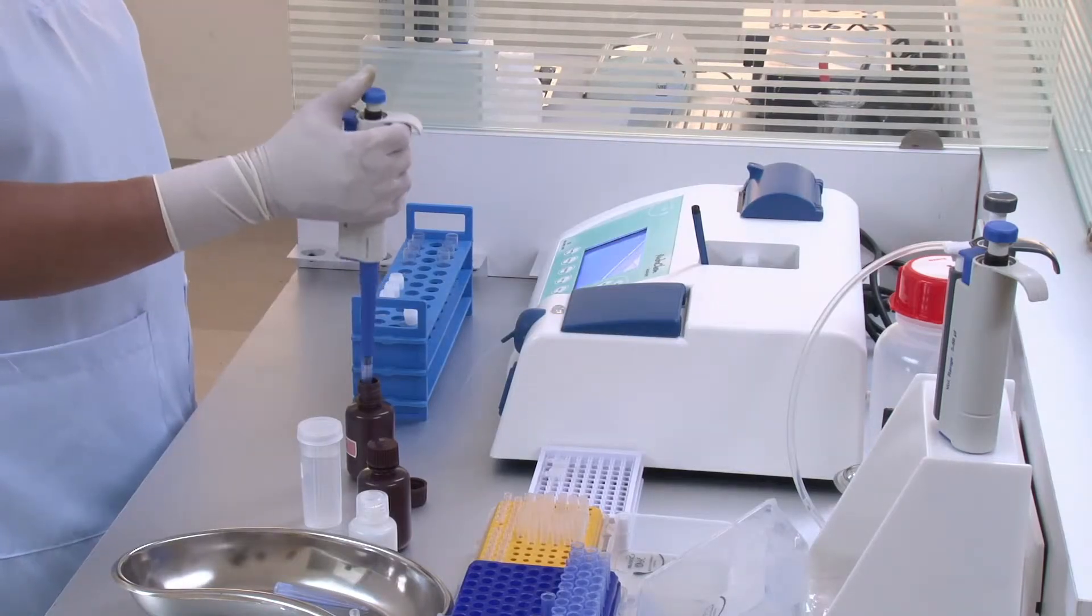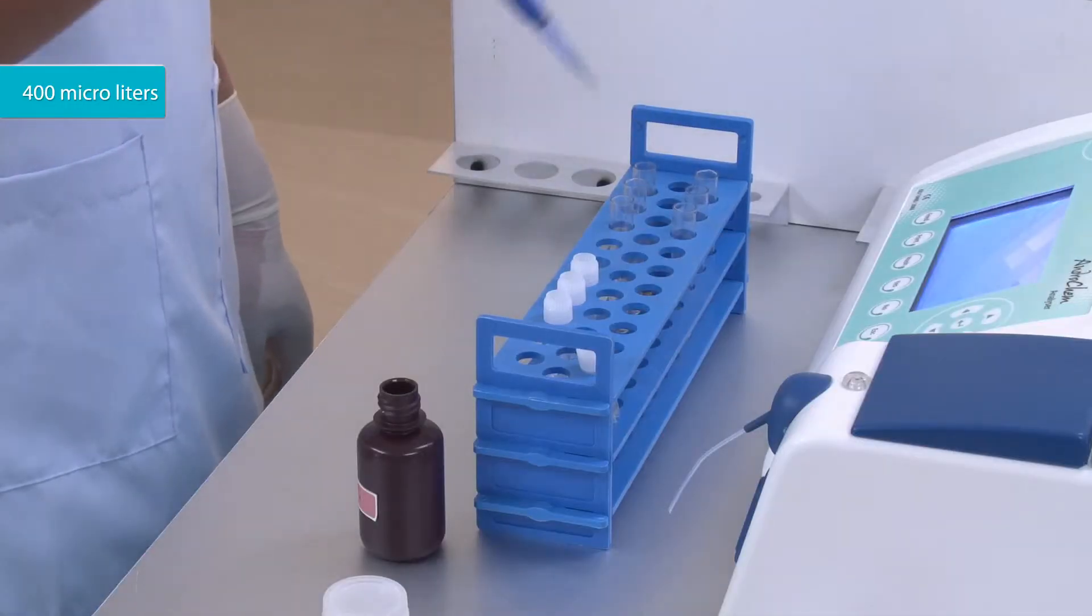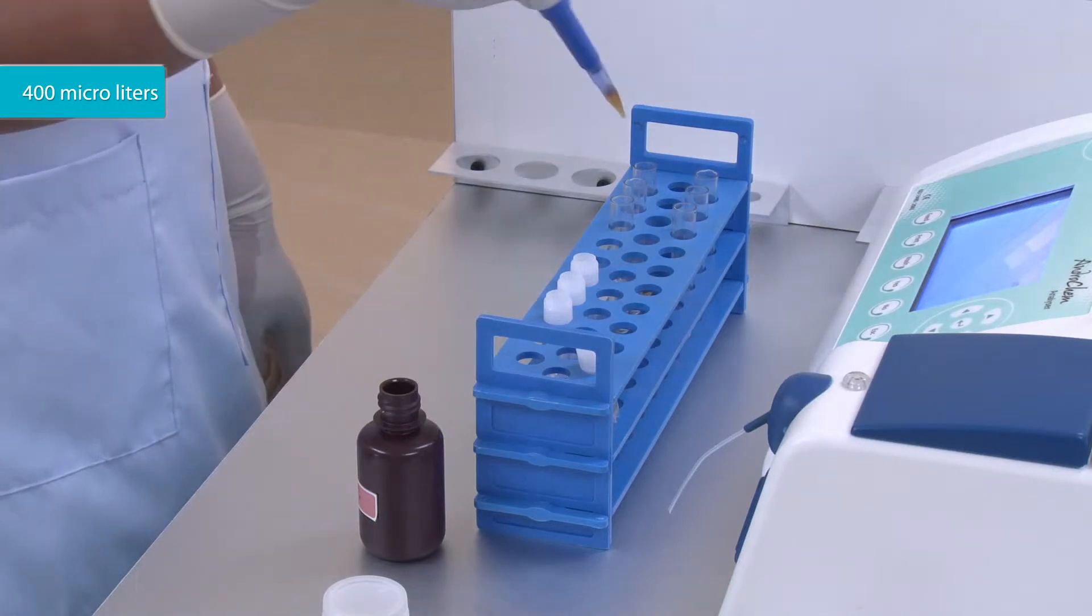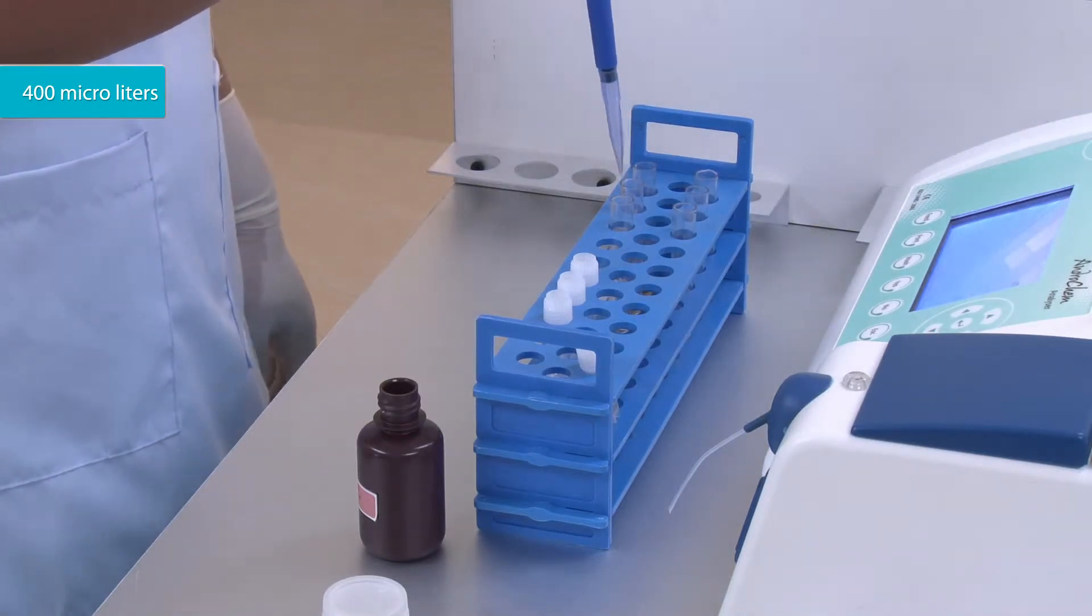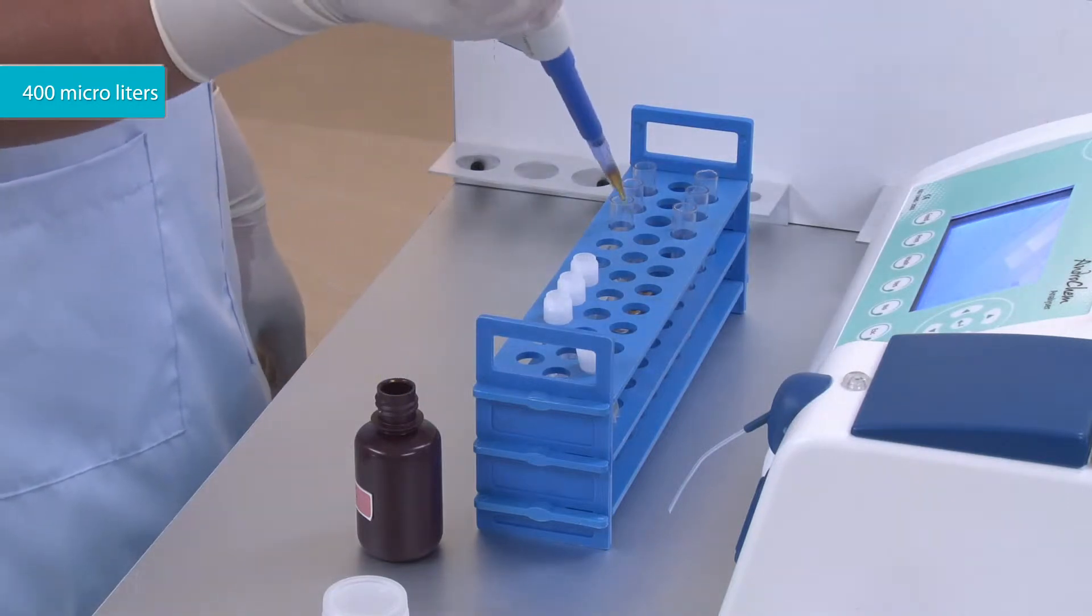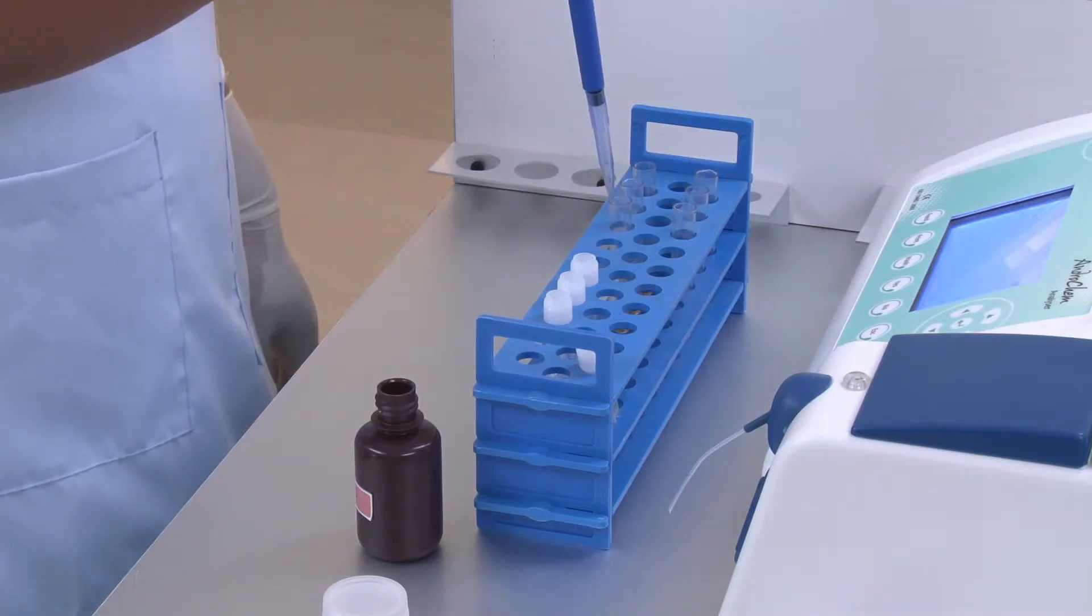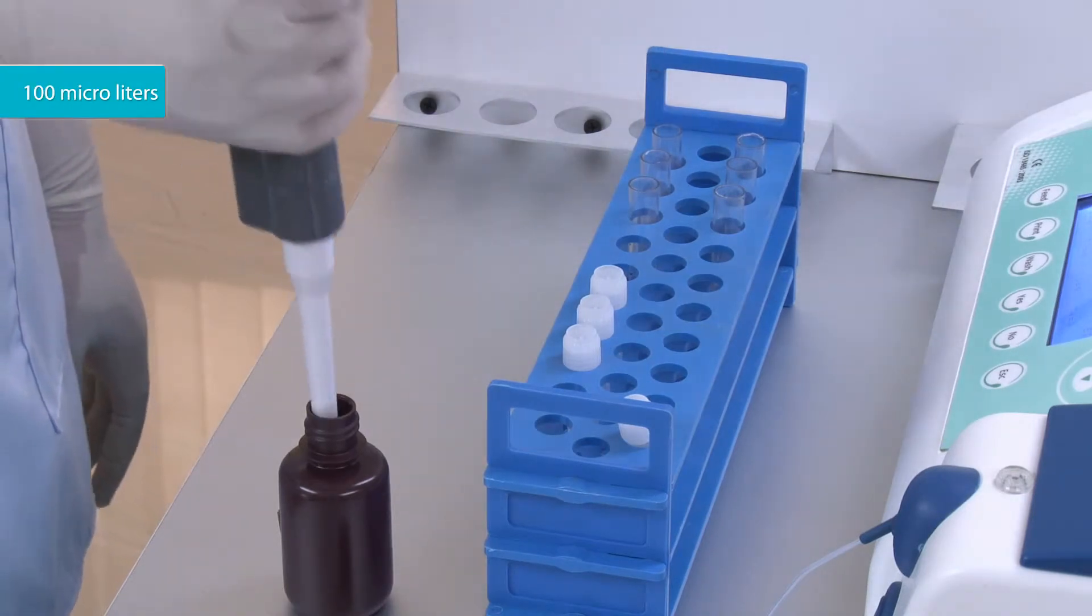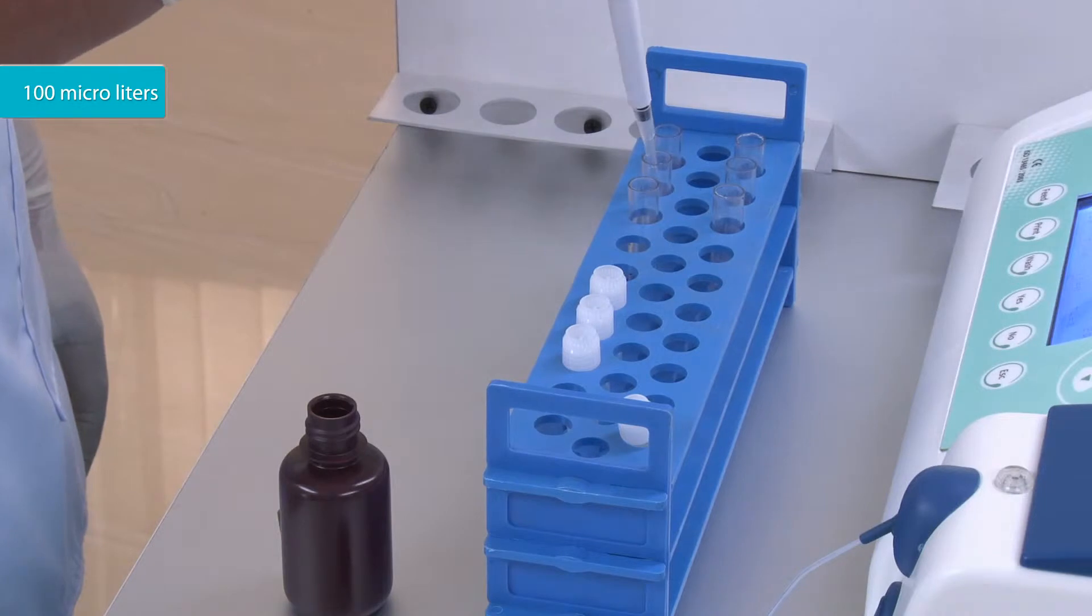Put 400 microliters of reagent 1 to all three tubes. Add 100 microliters of reagent 2 to all three tubes.